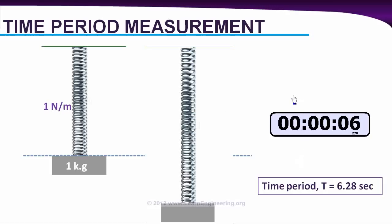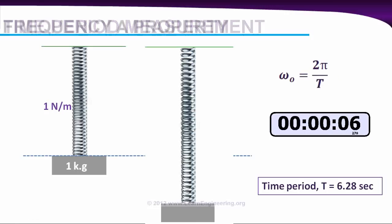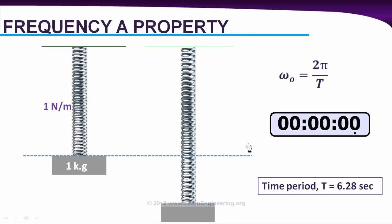In the vibration world, we commonly use a term called angular frequency omega, equal to 2π divided by time period. So experimentally, we've proved that frequency is a property of the system. It doesn't depend upon user input or initial conditions. Now the big question: what's the reason for that?